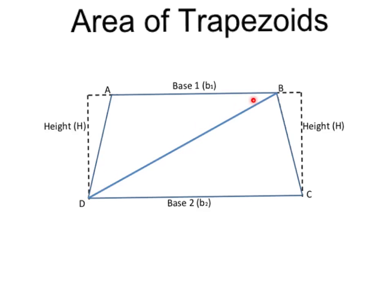So notice DBA is a triangle, and BDC is a triangle. So I'm going to break these two triangles apart and then find the area of each one and see if I can use that information to figure out what the formula must be to find the area of a trapezoid.